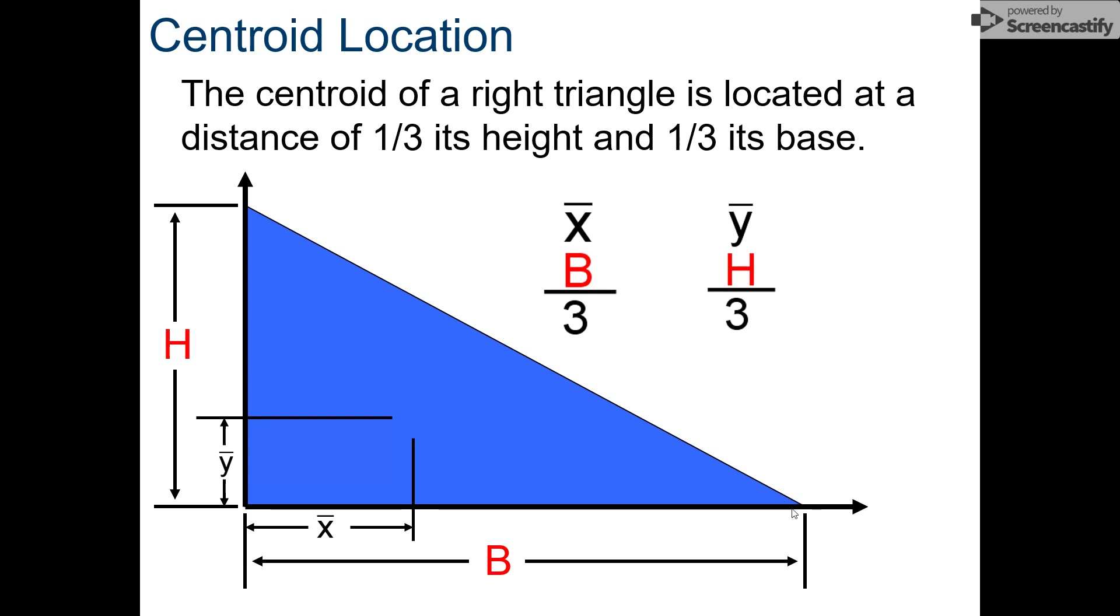Our triangle has to be a right triangle, and our location of the centroid is always taken from the right angle. The right angle is your zero zero point, and you go from there. X bar is one-third of your base, Y bar is one-third of your height, always from the right angle.